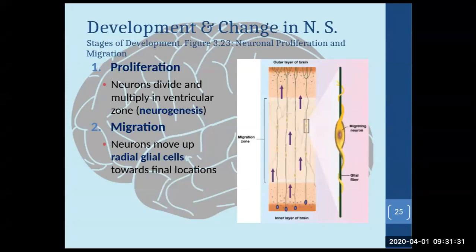Moving on to development and change in the nervous system. There are four stages when the fetus is developing: when cells are being made, when cells are going to where they're supposed to go, and when they're forming connections. When the nervous system is being built — going from a neural tube to the nervous system we know at birth — there are four stages. These are very important and there will likely be a question about them in the next exam.